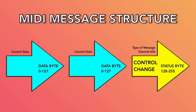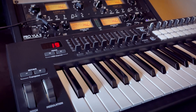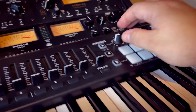With all control change messages, the status byte defines the type of message as a control change message. The first data byte defines what controller you're moving. For example, modulation wheel is CC number 1, sustain pedal is CC 64, and every knob or fader on your MIDI controller has a separate CC number associated with it. In modern MIDI production, most CCs are general purpose controllers that can be paired to anything — for example, pairing a knob with a filter in a synthesizer to create a filter sweep effect.